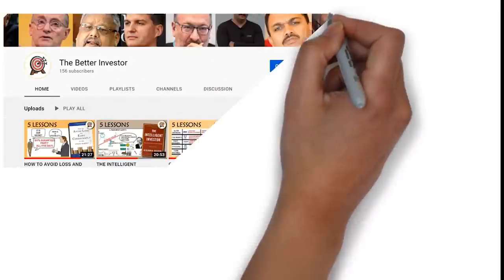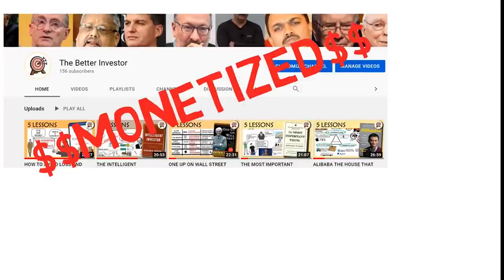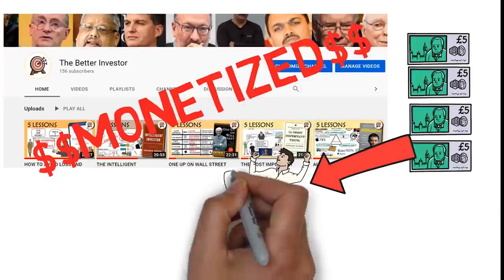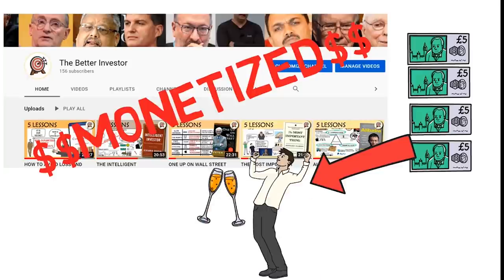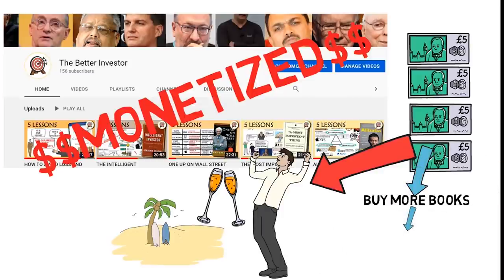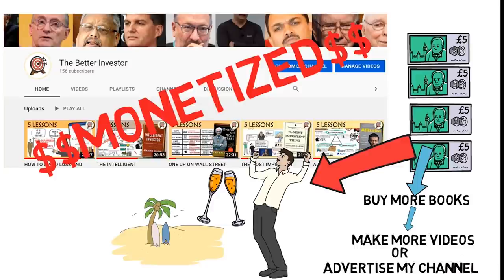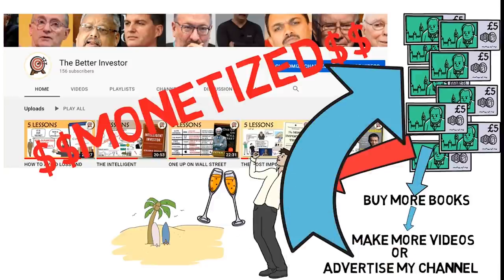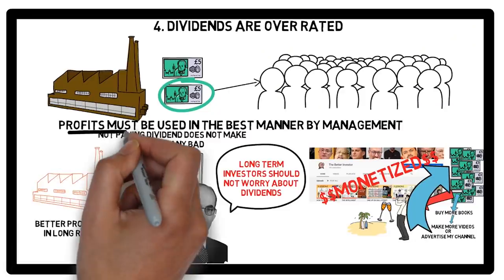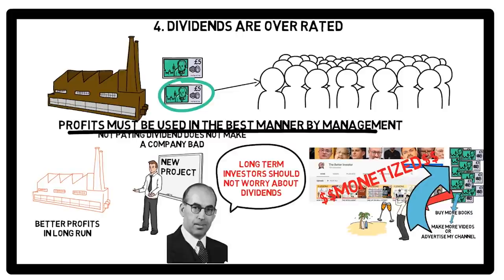If suppose my channel is monetized by YouTube and I start earning money from it, then either I can use that money to pay myself, from which I can party with my friends, go traveling, or what I can do is, I can use the money to buy more books on investing, which I can use to make more videos or use that money to advertise my YouTube channel in geographies where no one knows about me, which will help me earn higher revenues and I can keep repeating the process. So for this reason, paying dividends to the stockholders may not be the best use of money for a company.